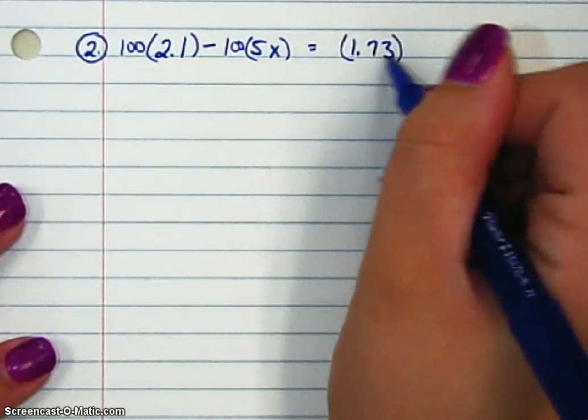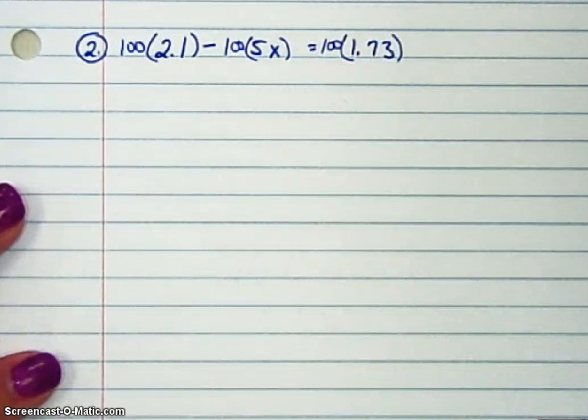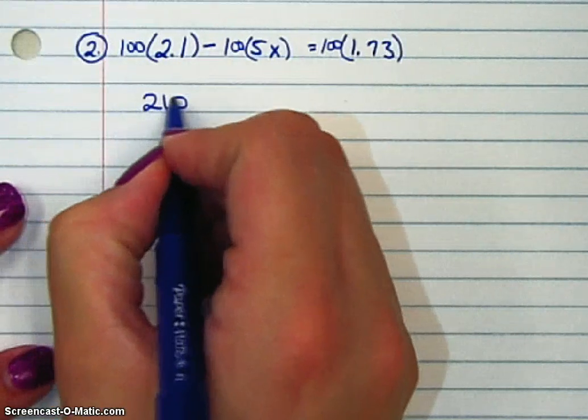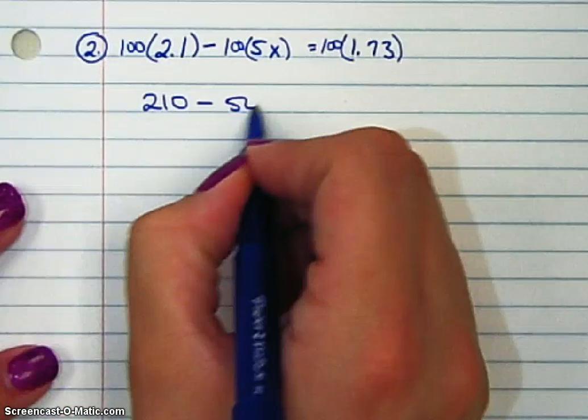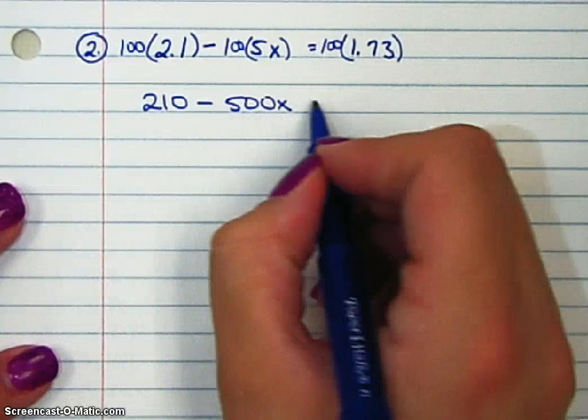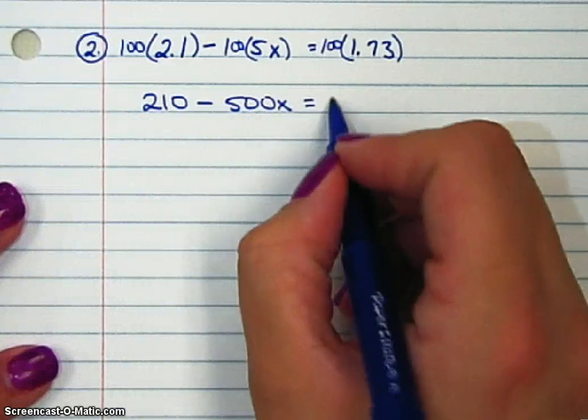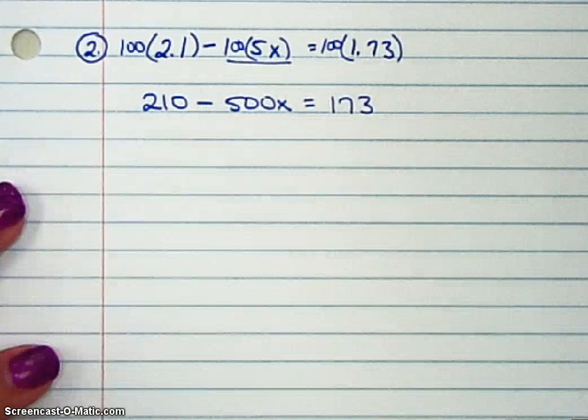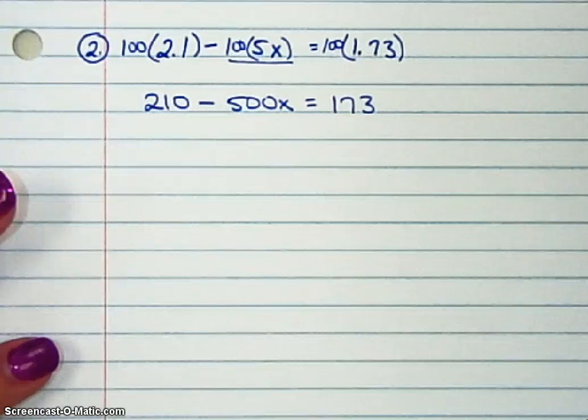And the only way to get rid of all those decimal places is to multiply by 100. A hundred times 2.1 is 210. A hundred times 5x is negative 500x. And then over here, we'd have 173. Make sure you take care of the 5x, too. It has to be multiplied by 100.